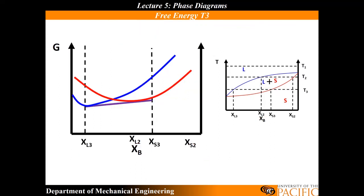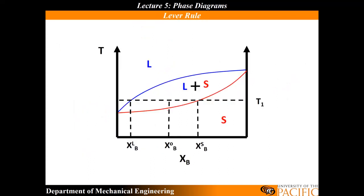Let's look at another example: T equals T3. Very similar thing — over on this side I am liquid. Once I cross the liquidus, now I'm in the two-phase region, liquid plus solid. I can draw a point where my slopes are equal. So between the liquidus line at XL3 and the solidus at XS3, I'm able to be in this liquid plus solid phase region because my chemical potentials are equal. And past the solidus, this is lower than that, so I'm pure solid.